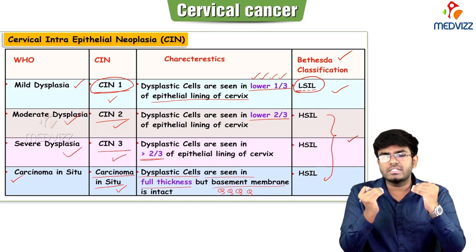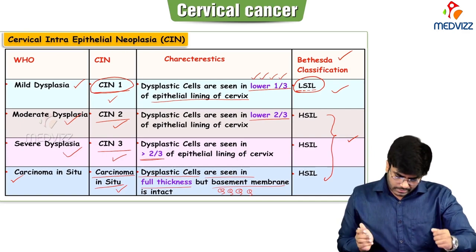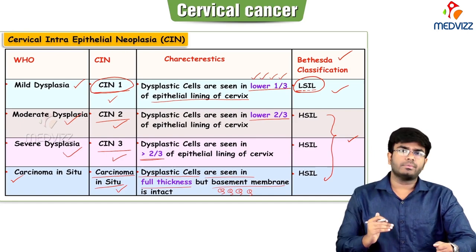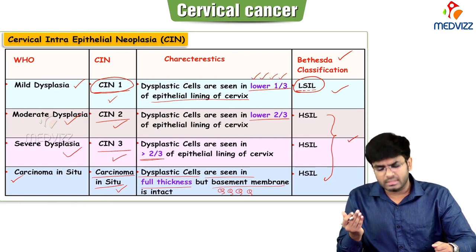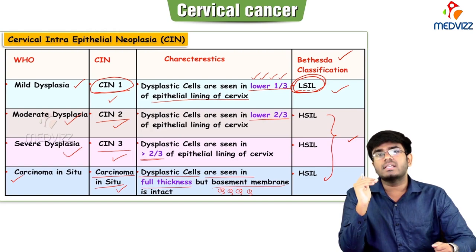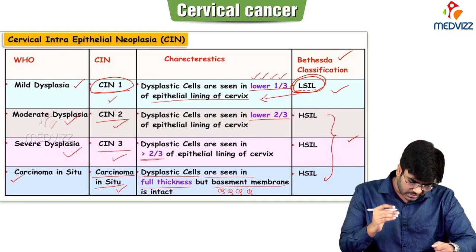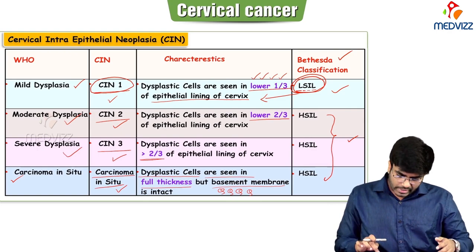Once there is a breach in the basement membrane, these dysplastic cells will undergo metastasis and it becomes invasive carcinoma — cervical cancer is now getting started. So up to carcinoma in situ it is pre-malignant with no metastasis, but from the point of basement membrane breach, cancer is spreading. L-SIL means dysplastic changes limited to the lower one-third, while H-SIL includes CIN2, CIN3, and carcinoma in situ.